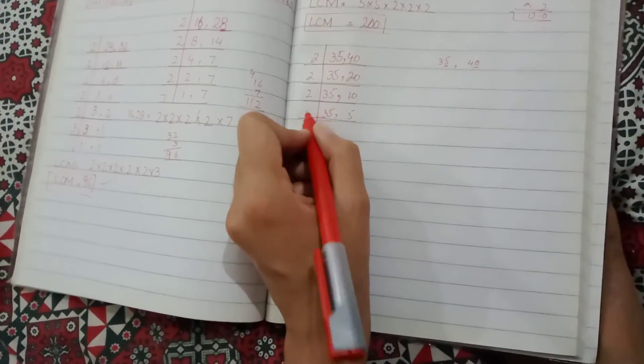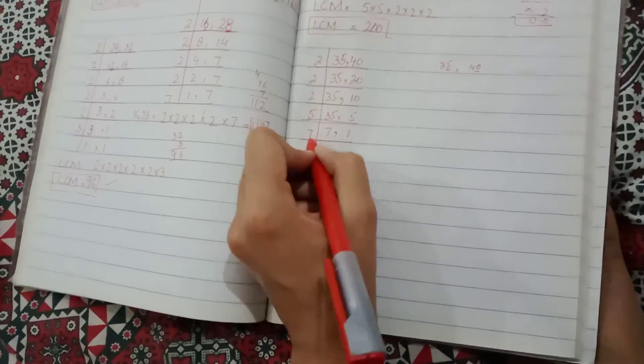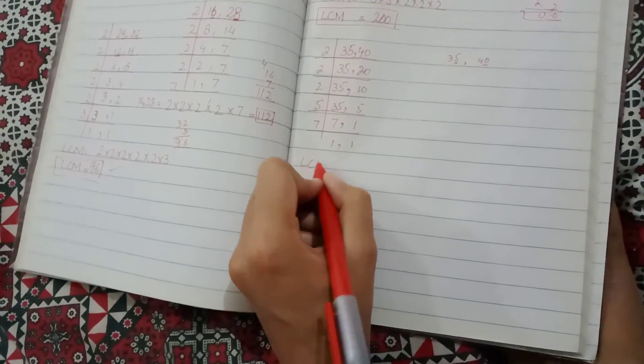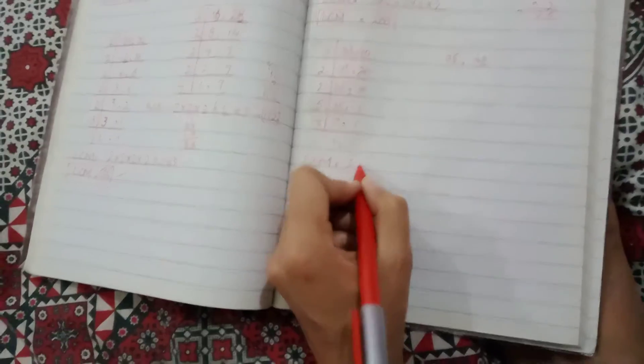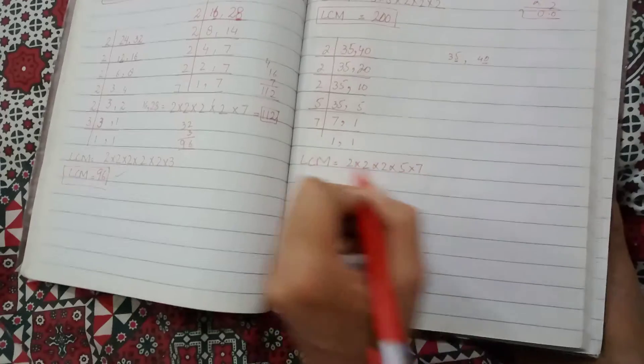Let's see. These two numbers are divisible by 5. We have 5 into 7 is 35, and 5 into 1 is 5. Now 7 is 7, 1 as it is. Now, 2 multiplied by 2 multiplied by 2, then 5 multiplied by 7.